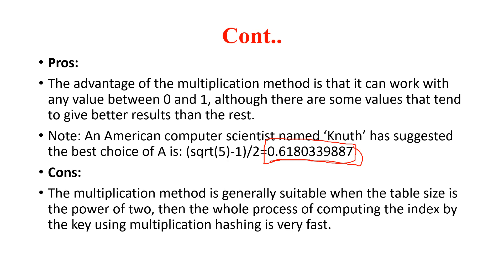There is also a disadvantage of the multiplication method. The multiplication method is generally most suitable when the table size is a power of 2. When the table size is a power of 2, the whole process of computing the index by the key using multiplication hashing is very fast.